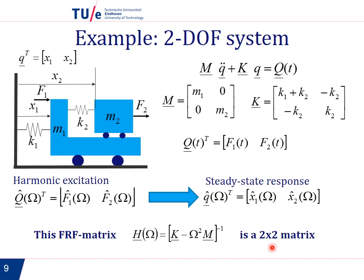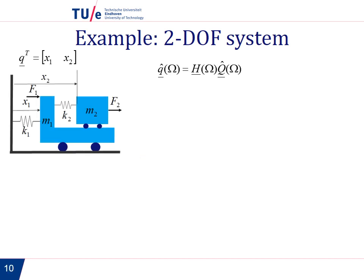In this case, the frequency response function matrix is a 2 by 2 matrix. So the frequency response function matrix will always have the same size as number of degrees of freedom we have.